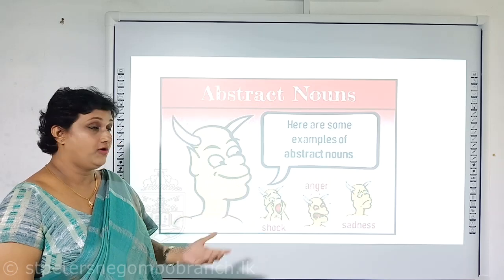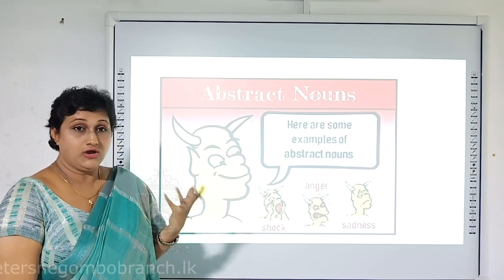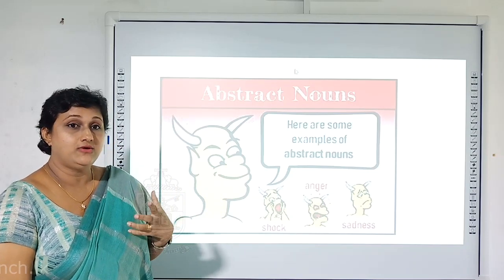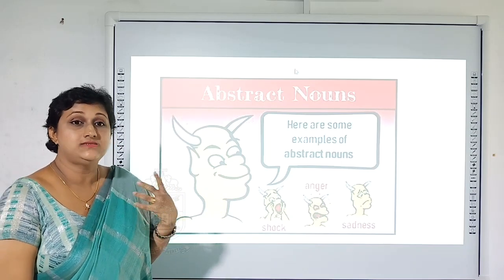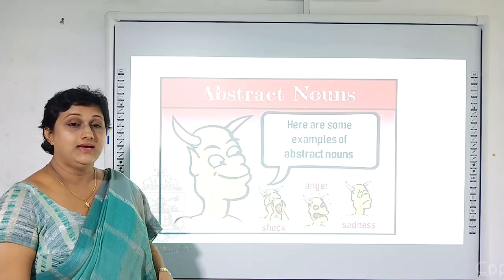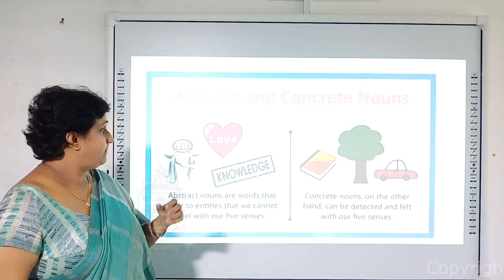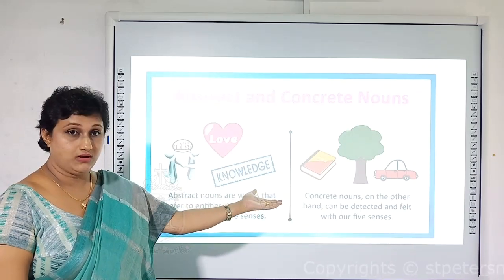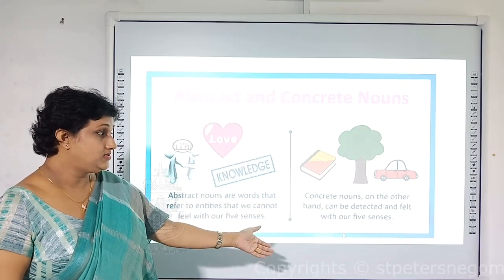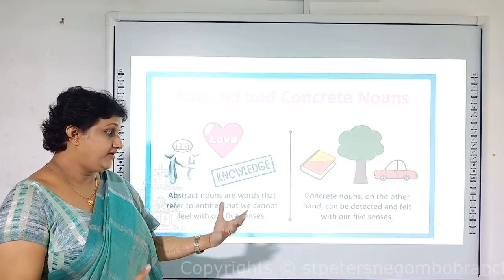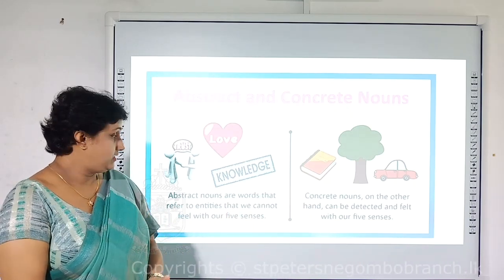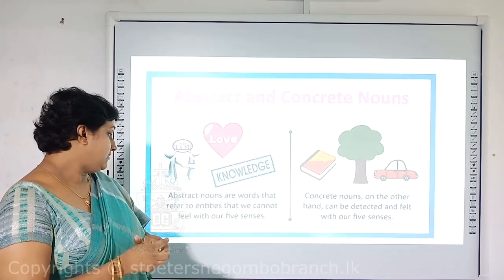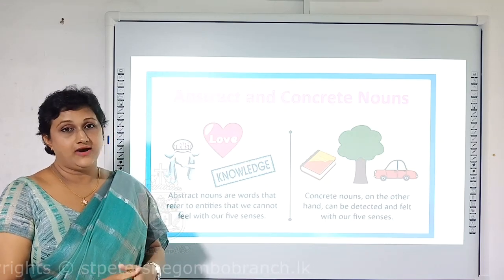Here are some examples for abstract nouns. You get shocked because of a certain situation. You get angry, sad — those are something that you feel, something that you experience due to a situation. These are called abstract nouns. Concrete nouns can be detected and felt with our own five senses, but abstract nouns are words that refer to entities that we cannot feel with our five senses.